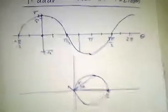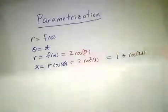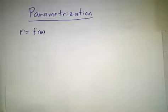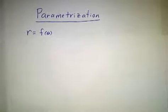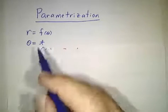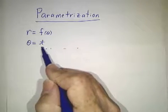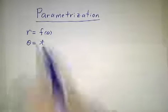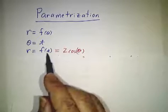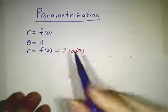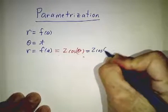Now, a second method is to use a parametrization. So we're given r as a function of theta. And if you want to call your parameter t, that's okay. In which case, theta is t and r is f of t, which in our case is 2 cos theta, which is 2 cos t.